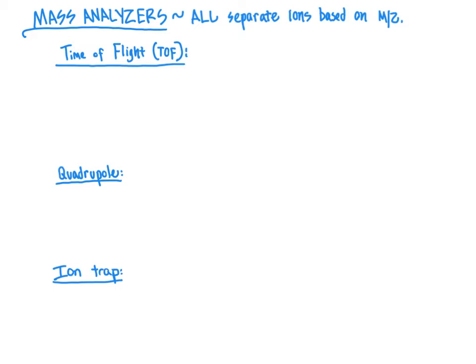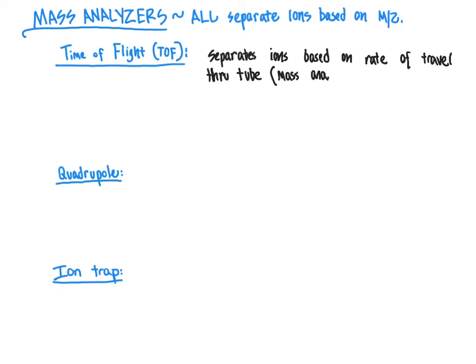In the time of flight mass analyzer, ions will be separated based on their rate of travel through what's referred to as a mass analyzer tube — which is literally a tube, a cylinder — where the ions travel through that cylinder at different rates depending upon their mass to charge ratio. The larger the mass to charge ratio, the slower the ion is going to travel. So the time of flight analyzer separates ions based on rate of travel through a mass analyzer tube.